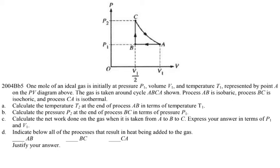This is the 2004 AP Physics B exam problem. One mole of an ideal gas is initially at pressure P1, volume V1, and temperature T1, represented by point A on the PV diagram. The gas is taken around the cycle A, B, C, and back to A.